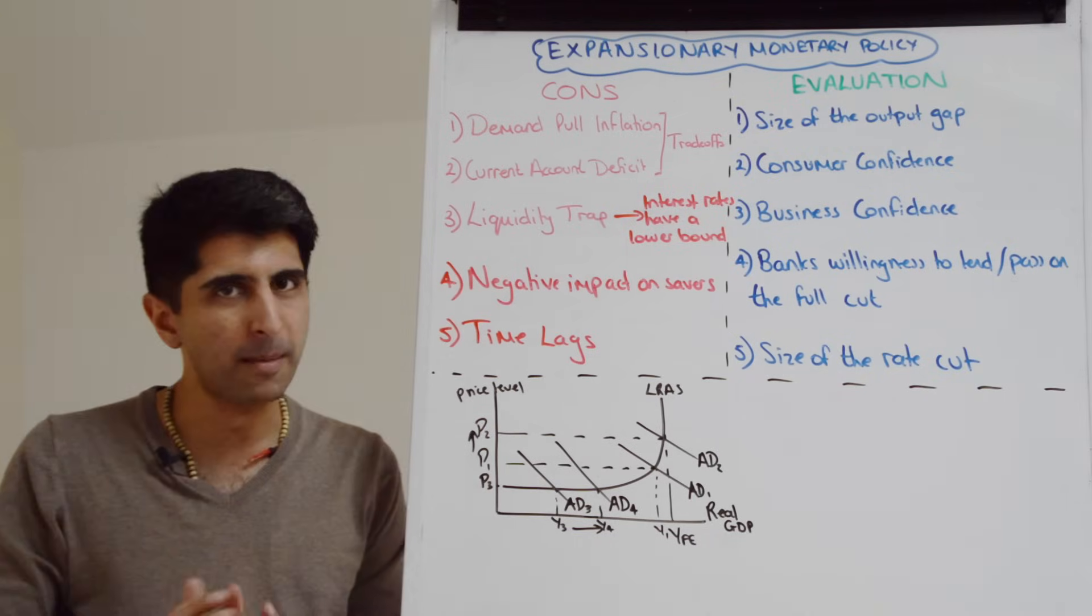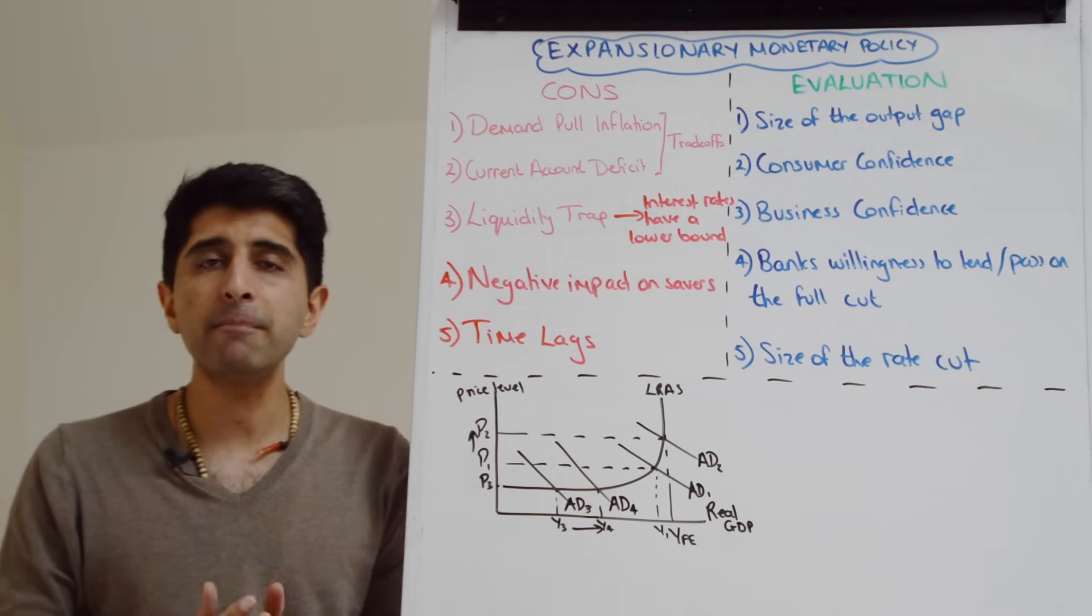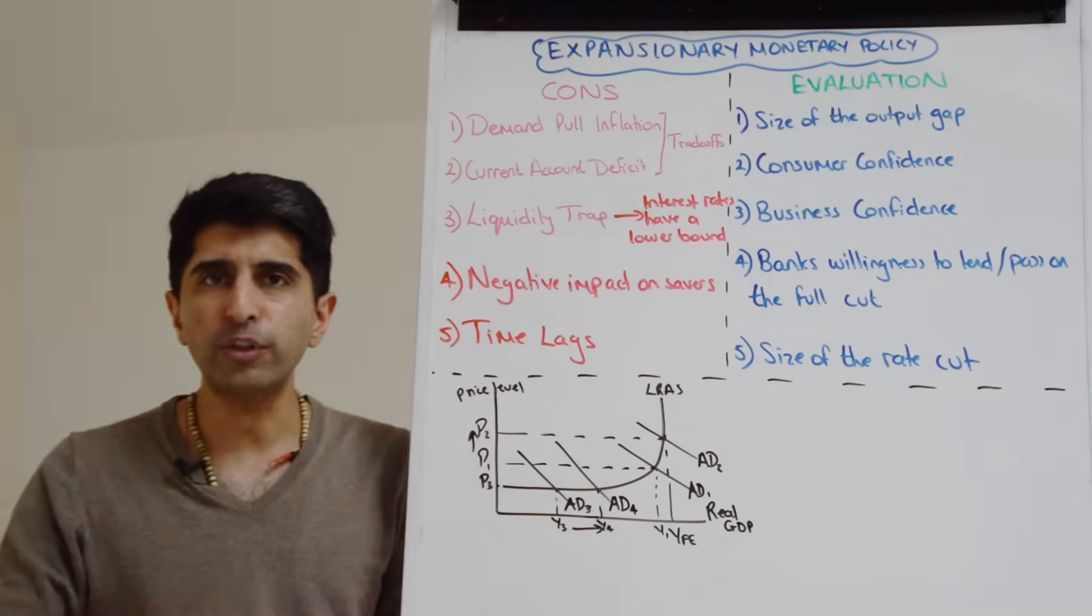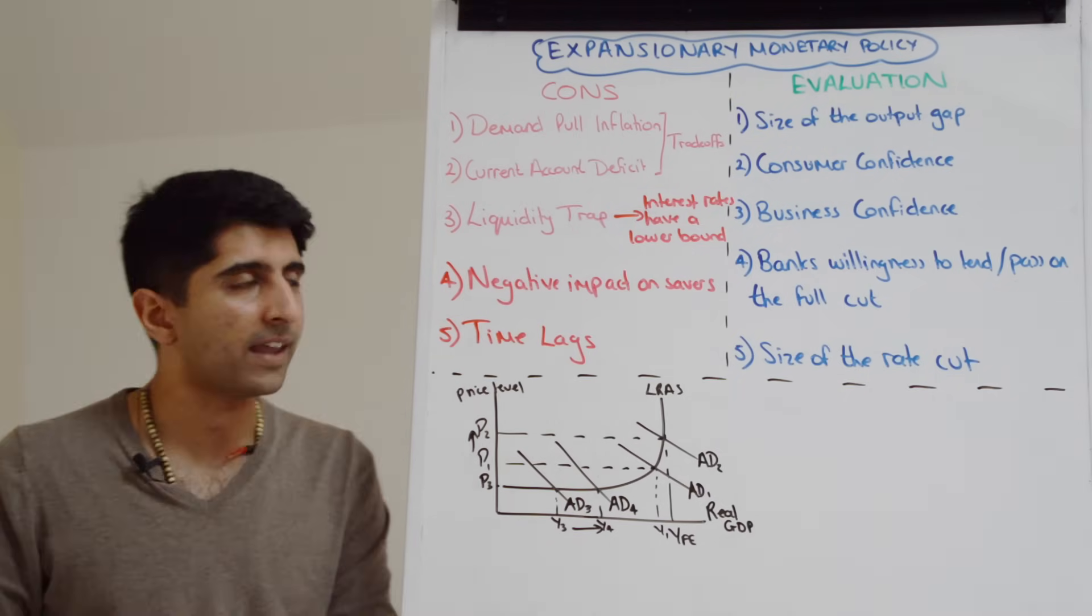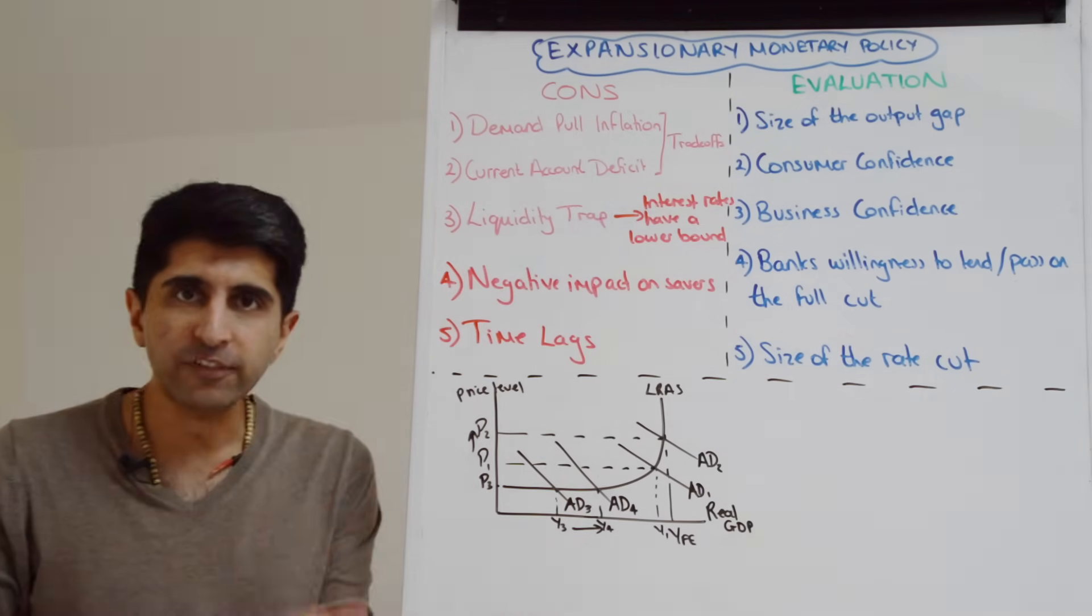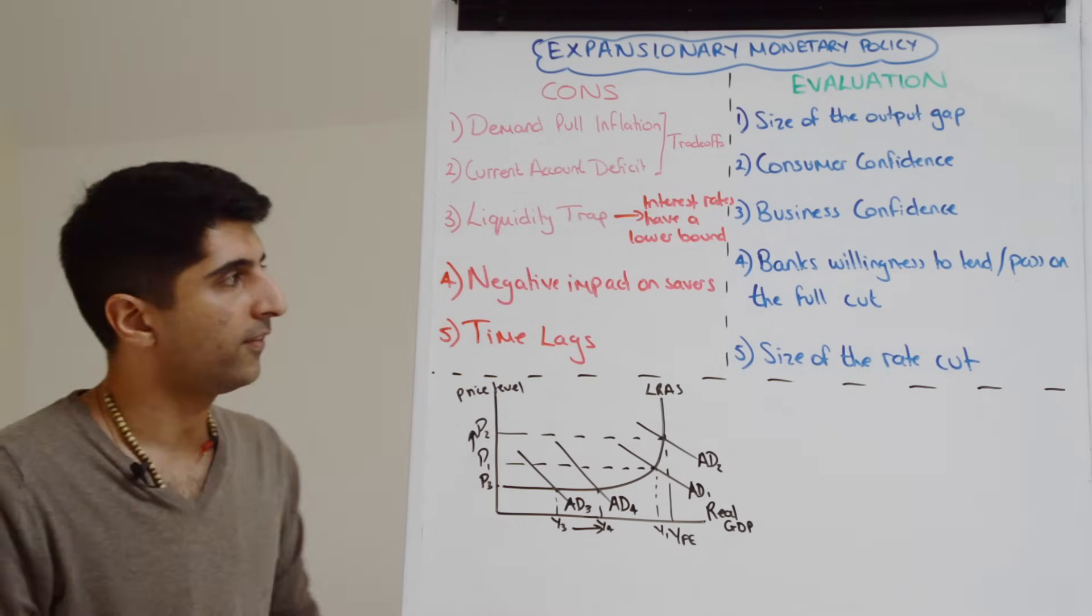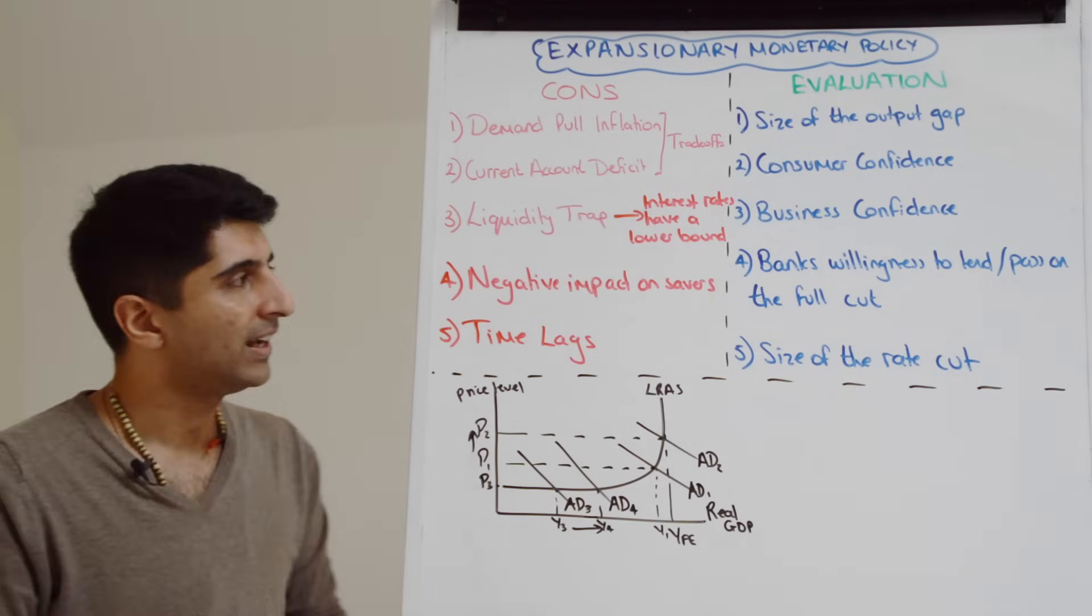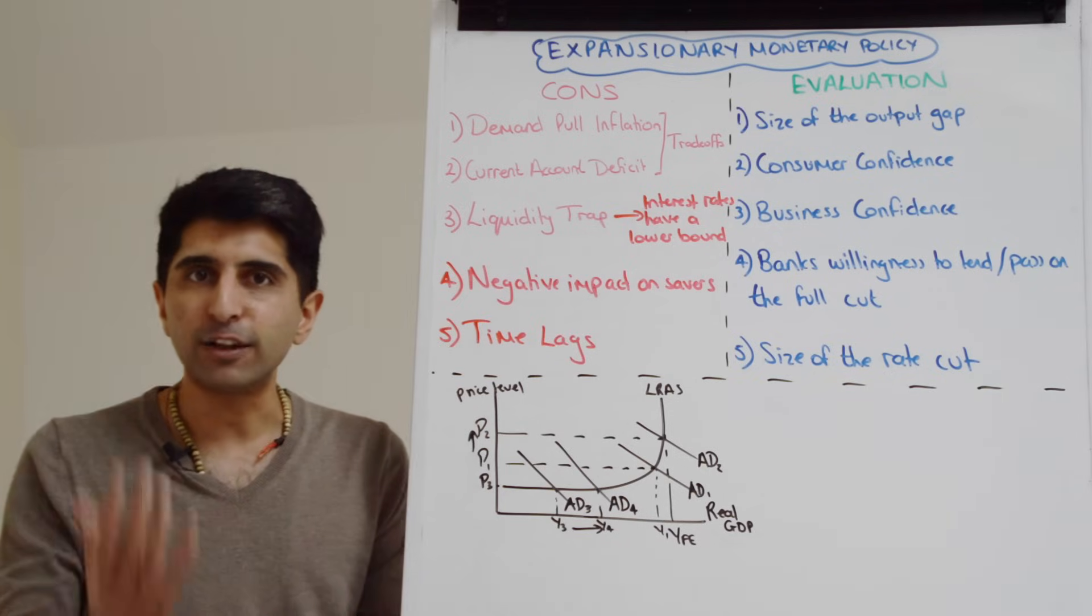Another issue is the negative impact that interest rate cuts will have on savers. Now we know that when interest rates fall, the rate of return on savings will fall. That's bad news for people with savings. And worse is that if inflation is higher than the nominal interest rate, than interest rates in the economy, then the real return on savings could well be negative. That's not good for savers at all. The rate of return they're getting on their savings is less than the rise in prices in the economy.